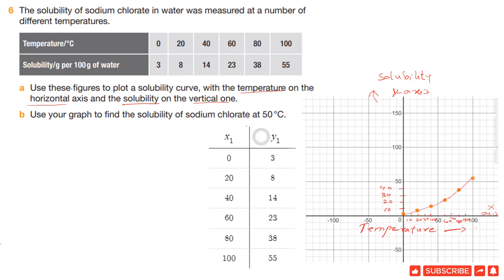Question B states: Use your graph to find the solubility of sodium chloride at 50 degrees Celsius. When you look at the curve at 50 degrees Celsius, the curve is at this point, and when we join this point to the y-axis we get this answer near 20, which becomes almost 18. So the answer for B: solubility of sodium chloride at 50 degrees Celsius is 18 grams.